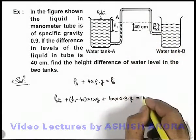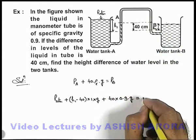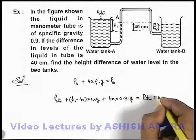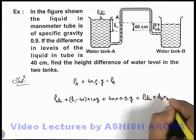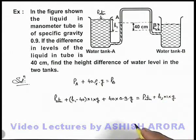Which can be written from the other side as P atmospheric plus h2 multiplied by 1 into g. This is the way we can calculate it.